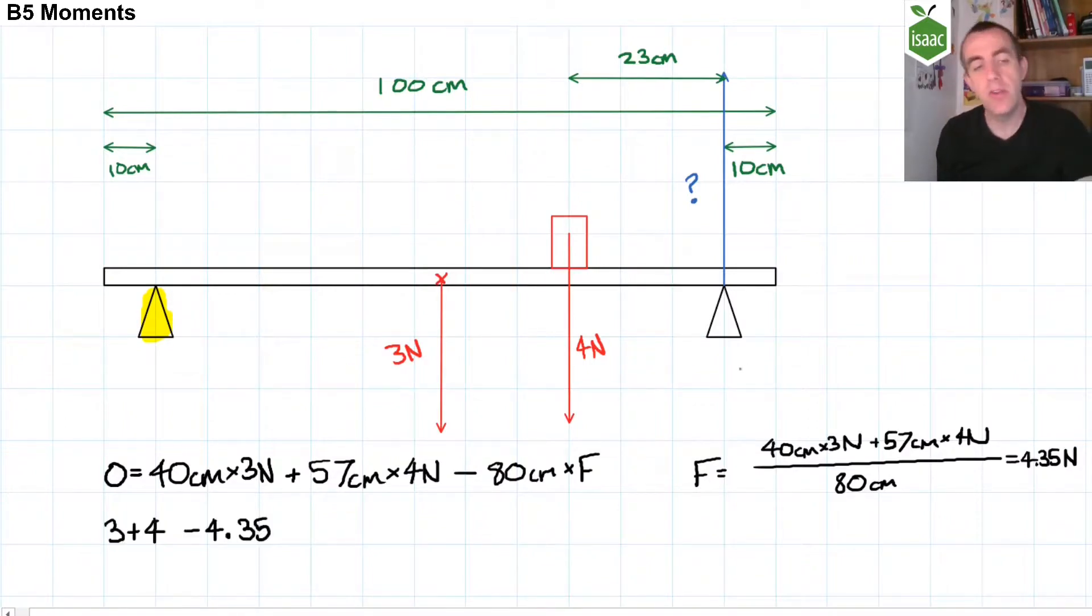We can now use Newton's first law to find the support force on the left-hand pivot because the resultant force on this beam must be zero if the beam is not accelerating. The beam has three newtons and four newtons of force acting downwards, and we'll take those as positive. And we subtract the 4.35 newtons of force upwards, and that tells us how much force there is on the left-hand pivot, which is 2.65 newtons.